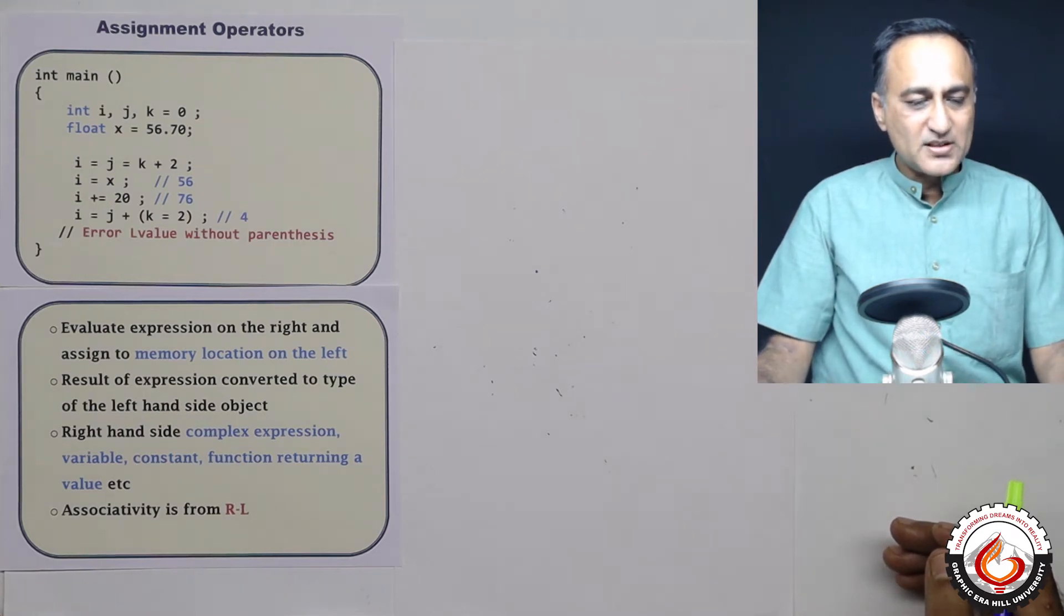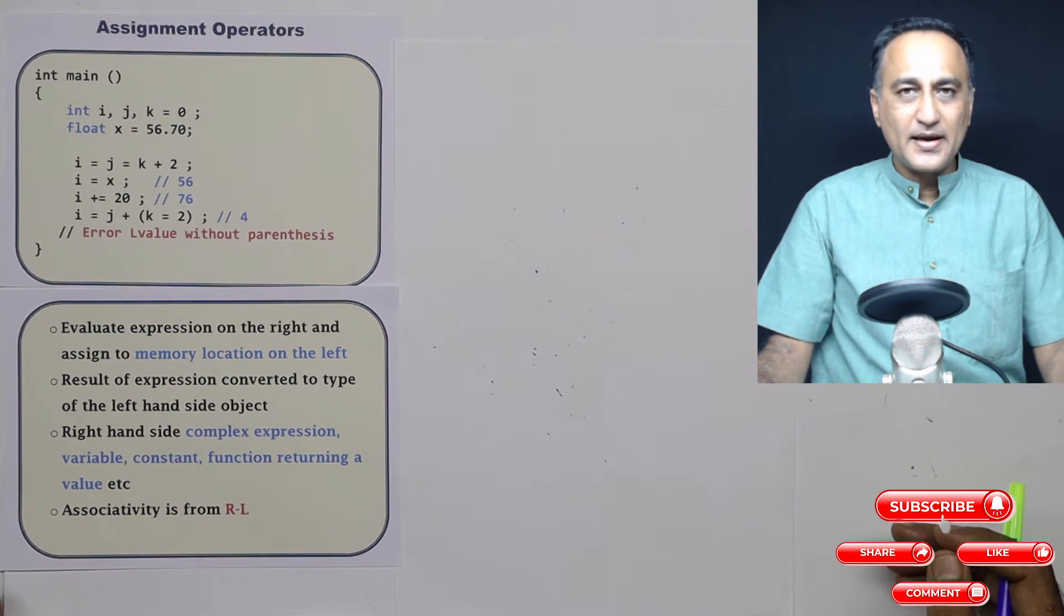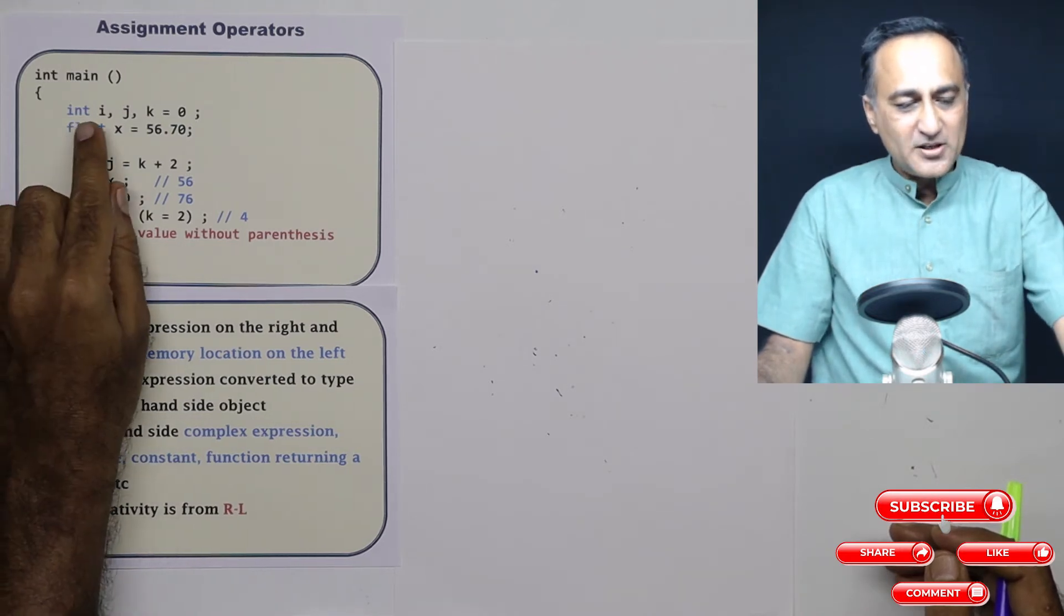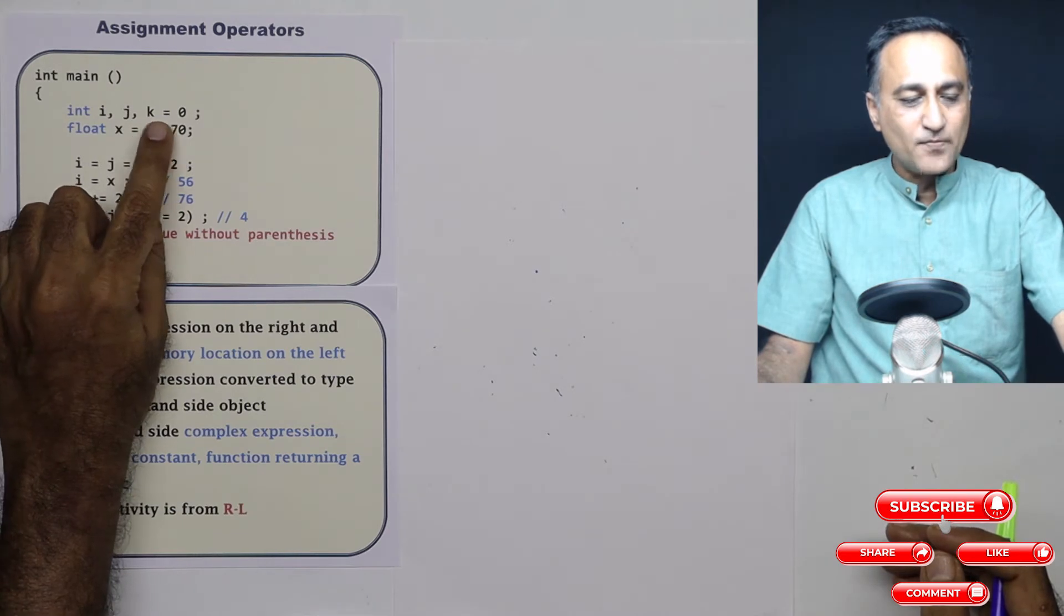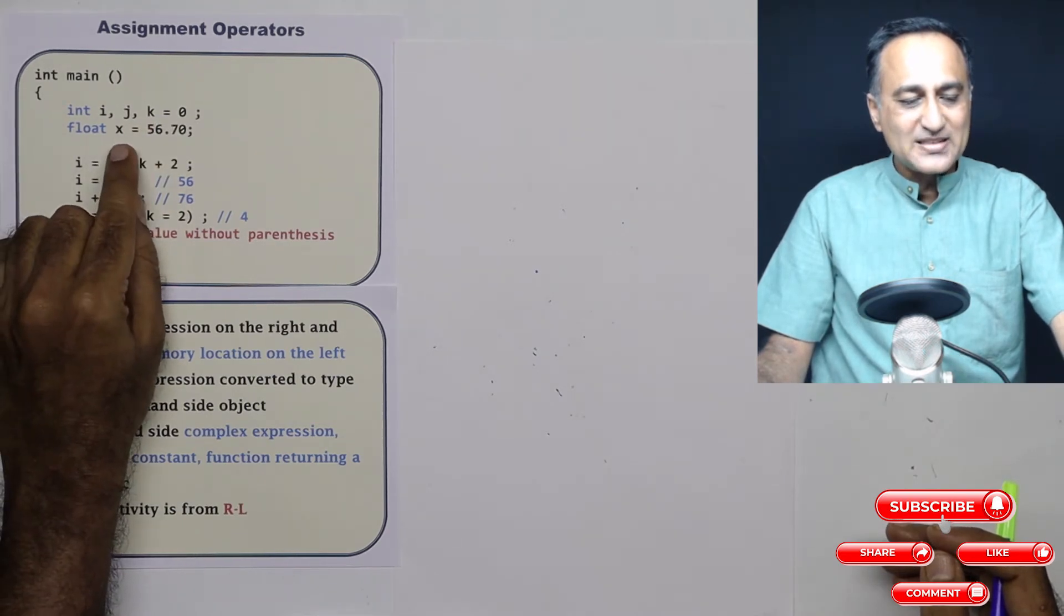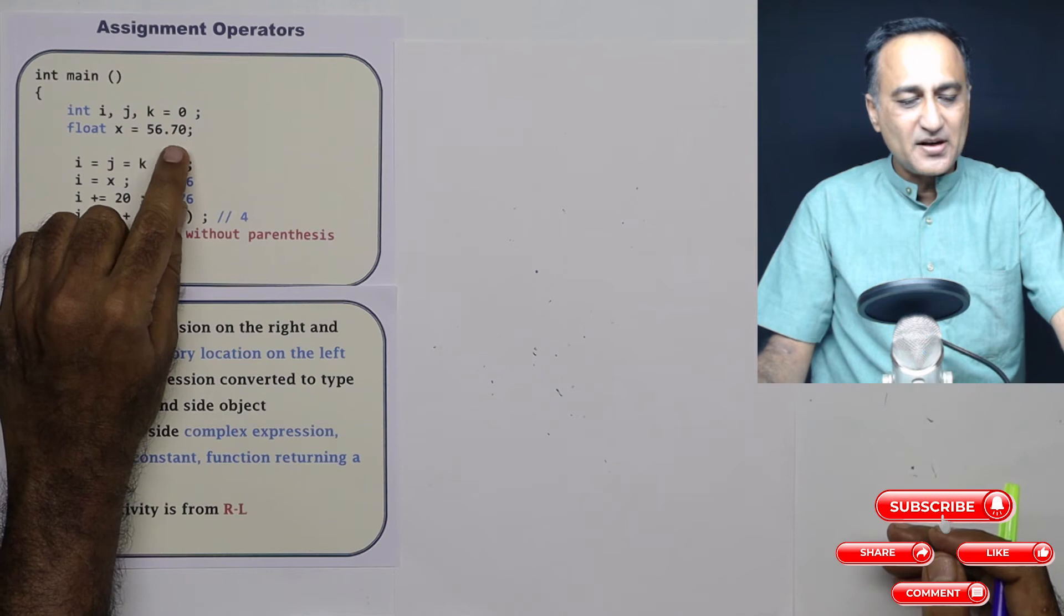As usual, trying to understand the concept, we will take a look at an example. I have defined integer variables i, j, k without any values; k is 0. I have defined a float variable x, which has the initial value 56.70.